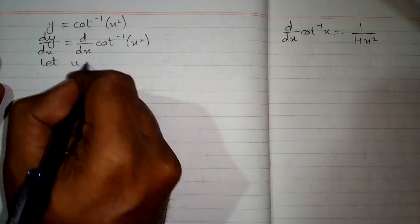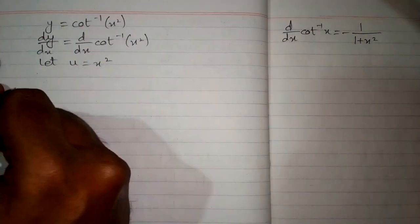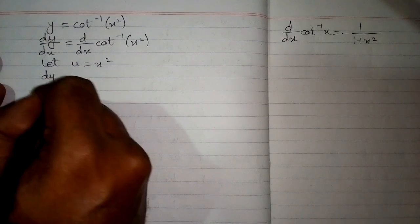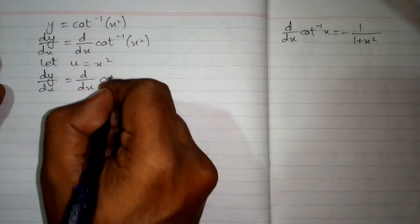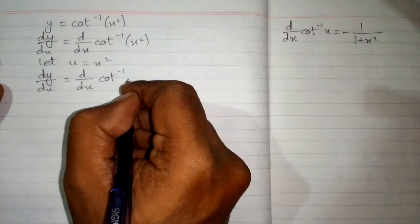So let u equal x squared. dy by dx equals d by dx of inverse cot of u.